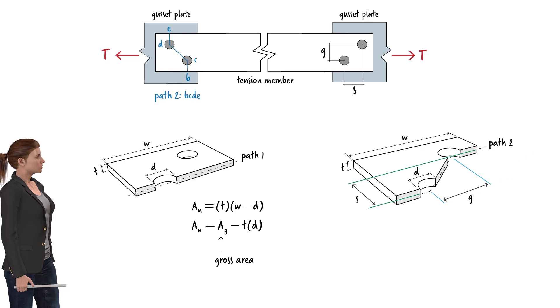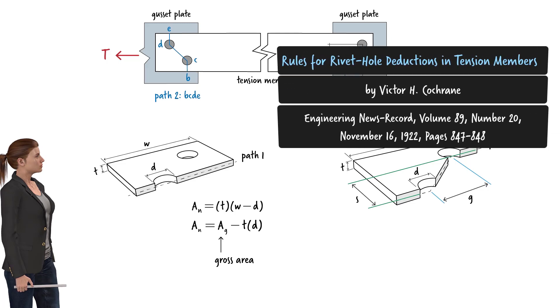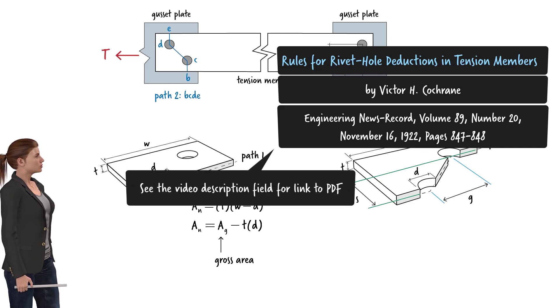The AISC specification references a simple procedure for calculating the net area along such a diagonal path. Victor Cochrane presented a derivation of this procedure in the November issue of Engineering News Record in 1922. For your reading pleasure, we have captured the relevant part of the original Cochrane article in PDF format. The link is provided in the video description field.